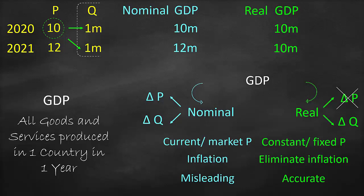They are exactly the same because we have the same quantity, and real GDP measures a change in quantity only. Therefore, real GDP is more accurate compared to nominal GDP. Nominal GDP is misleading because it reflects inflation.